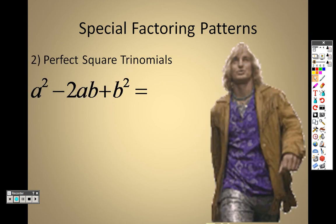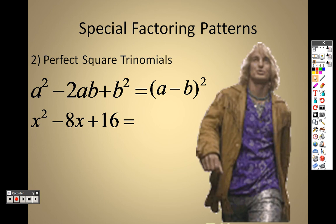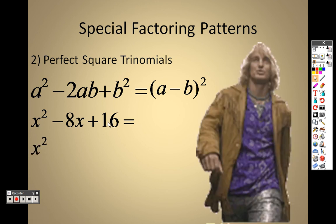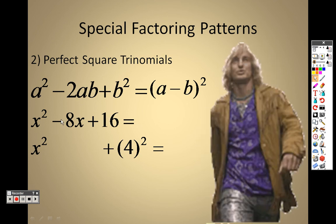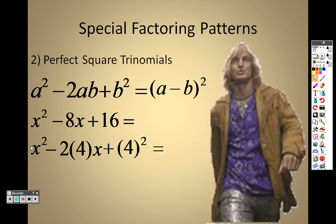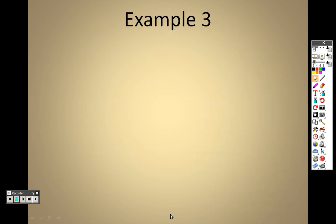Perfect square trinomials also work with subtraction: (a minus b)². The subtraction sign tells you which form to use. For x² minus 8x plus 16: x is squared, 16 is 4 squared, and 4 times negative 2 gives negative 8 — so a is x and b is 4. Putting a subtraction sign in the middle and squaring gives (x minus 4)². We'll finish up section 5.2 with example 3 next time.